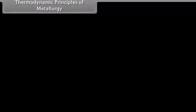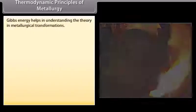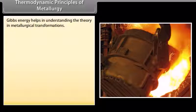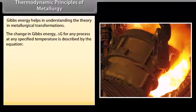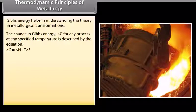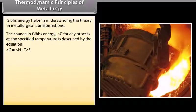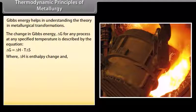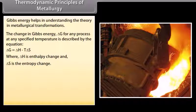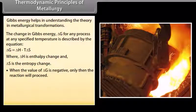Thermodynamic principles of metallurgy. Gibbs energy helps in understanding the theory in metallurgical transformations. The change in Gibbs energy ΔG for any process at any specified temperature is described by the equation ΔG = ΔH - TΔS, where ΔH is enthalpy change and ΔS is the entropy change.